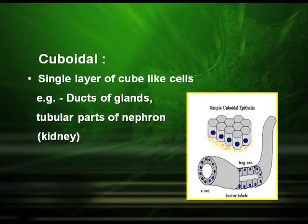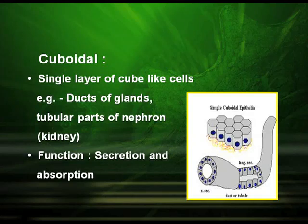The cuboidal epithelium tissues, as the name suggests, have cube-like cells arranged in a single layer. They are found in the ducts of glands and the tubular parts of the kidney, that is, in the nephrons. Their function is secretion and absorption.